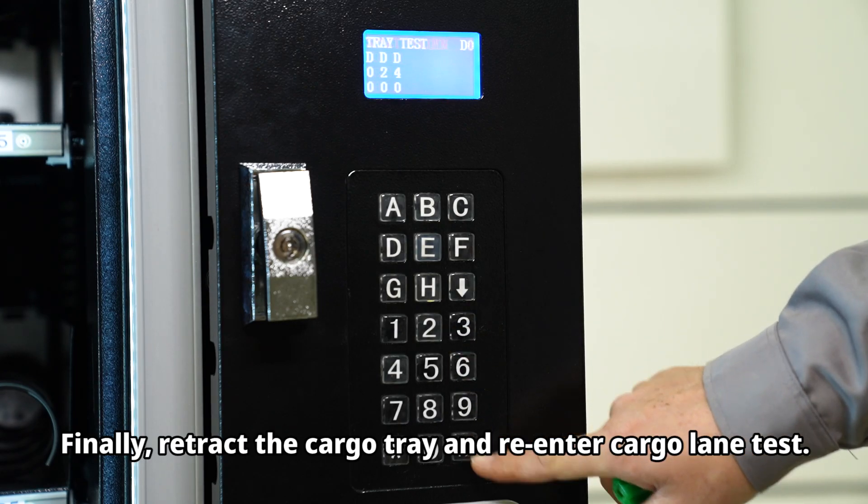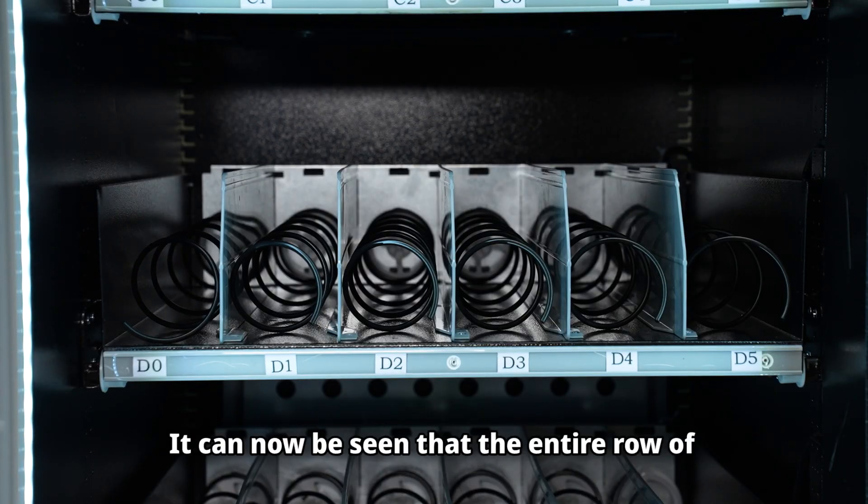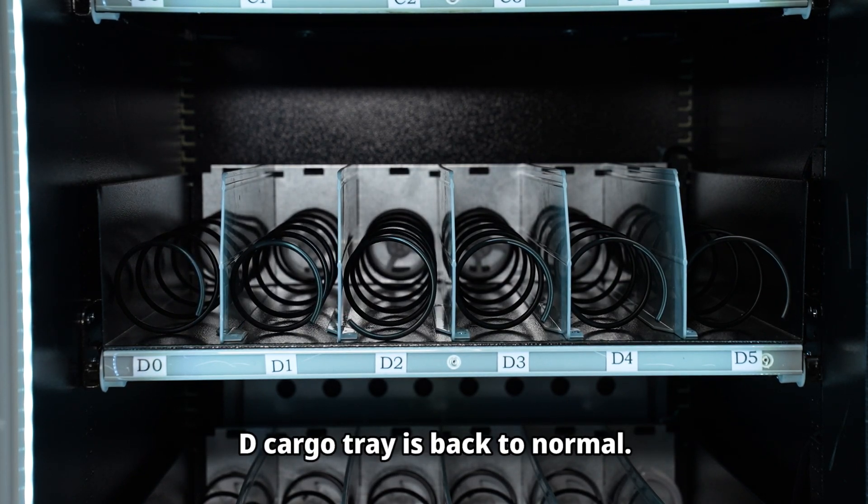Finally, retract the cargo tray and re-enter the cargo lane test. It can now be seen that the entire row of D cargo tray is back to normal.